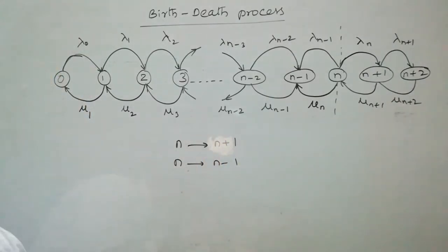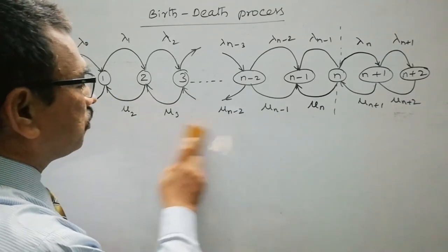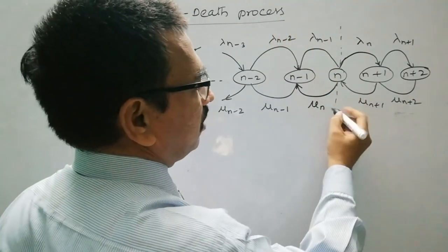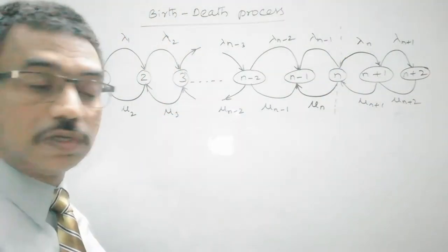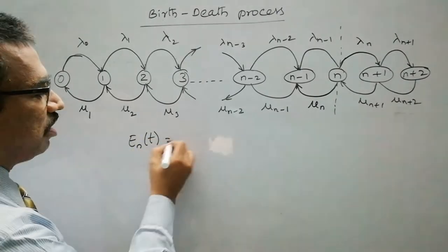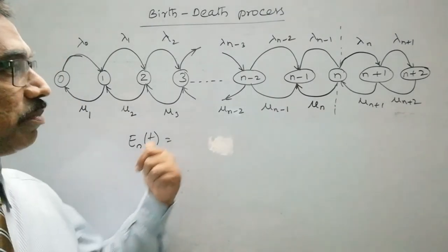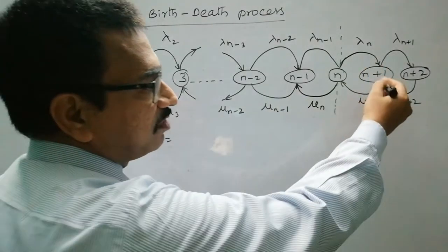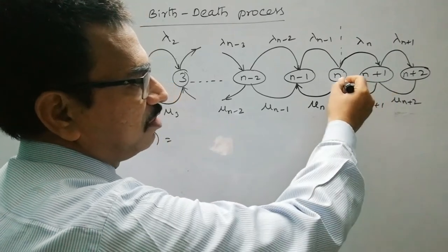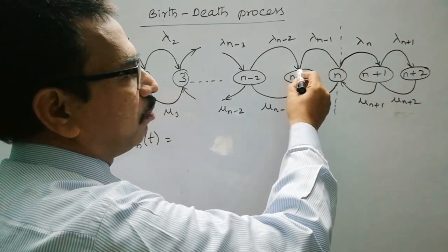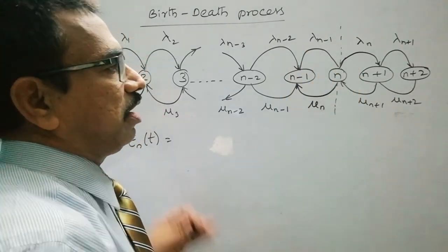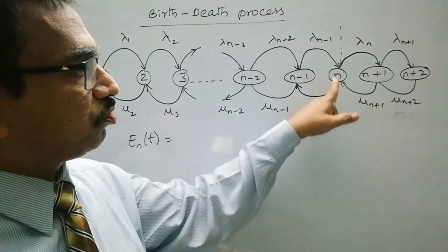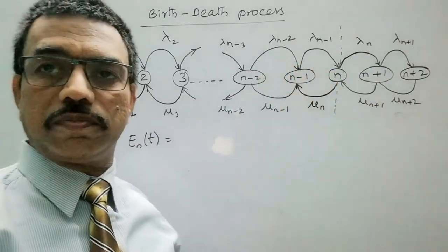Now let us derive the balance equation for any state n. Consider state n at time t. Let E_n(t) be the number of times the system enters state n. The system can enter state n in two ways: when the number of customers is n+1 and a service completion occurs, moving to state n; or when the number of customers is n-1 and a new arrival occurs, moving to state n. These are the two possibilities to enter state n.